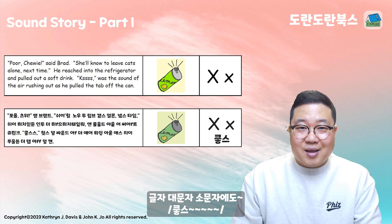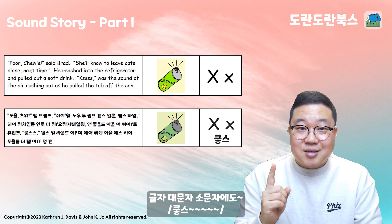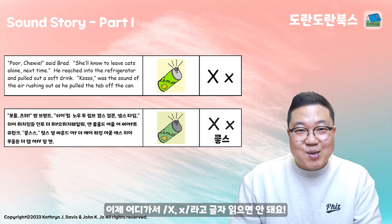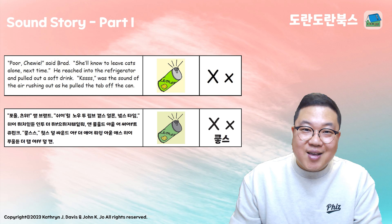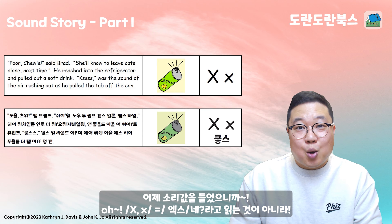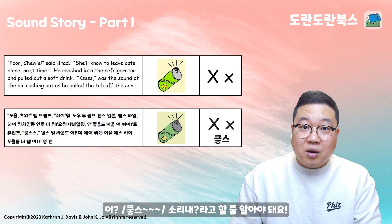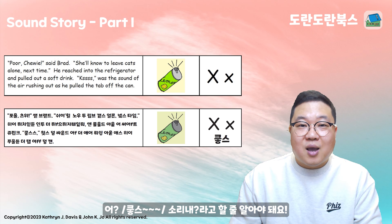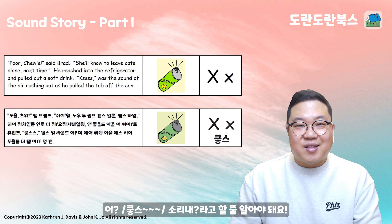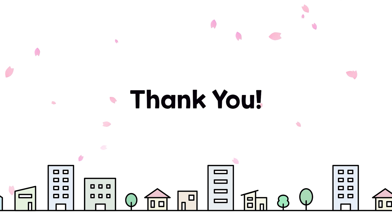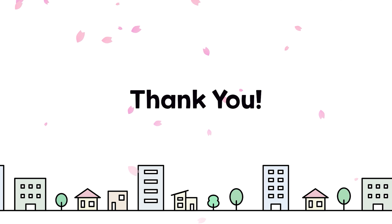그림에다가 ks, ks, 그리고 대문자 소문자에도 ks. 여기 가서 X라고 글자 읽으면 안 돼요. 이제 소리값을 들었으니까, X네 이게 아니라, ks 소리네 라고 할 줄 알아야 돼요 (You should now recognize X as the sound ks, not just the letter name X).